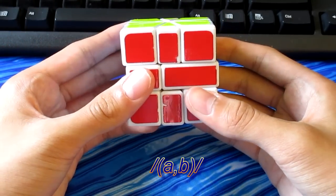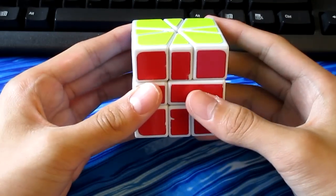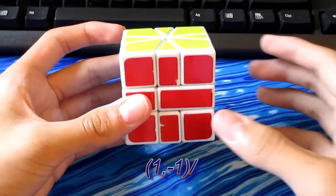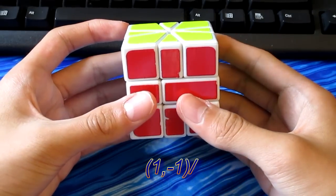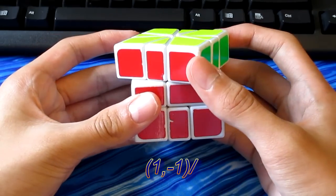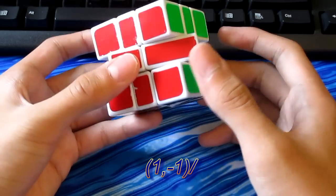Each edge is worth one unit, and each corner is worth two. I'll give you a few examples so you get the hang of this. One comma negative one slash means to turn the top face one unit clockwise, the bottom face one unit counterclockwise, and do a forward slash.